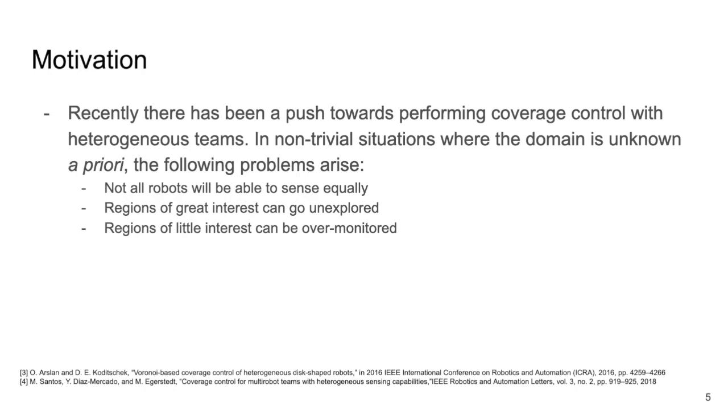Traditionally, coverage control using a team of ideal and identical robots has been solved by an algorithm called Lloyd's algorithm, proposed by Cortez in 2004. However, in recent years, there have been several works applying coverage control to teams of heterogeneous and non-ideal robots. This means that robots within the team have range-limited or anisotropic sensing capabilities. Performing coverage with these teams cause issues because if a robot cannot see beyond its sensing range, it won't explore. Or if a team is comprised of robots of differing capability, a robot that can see very far might be assigned to a region of little interest.